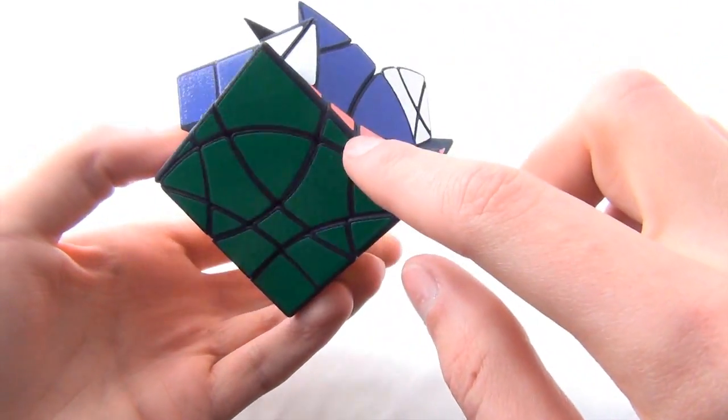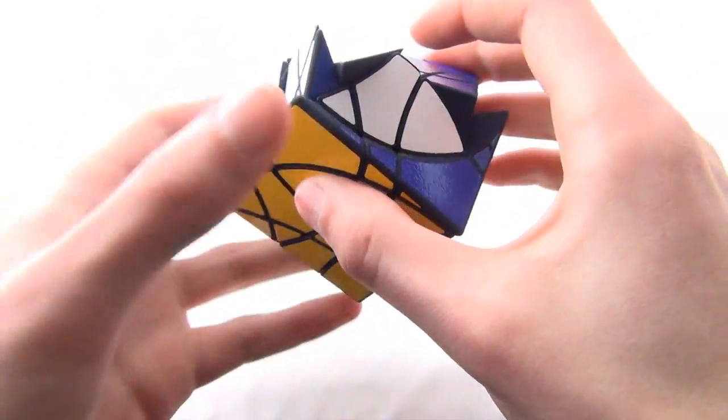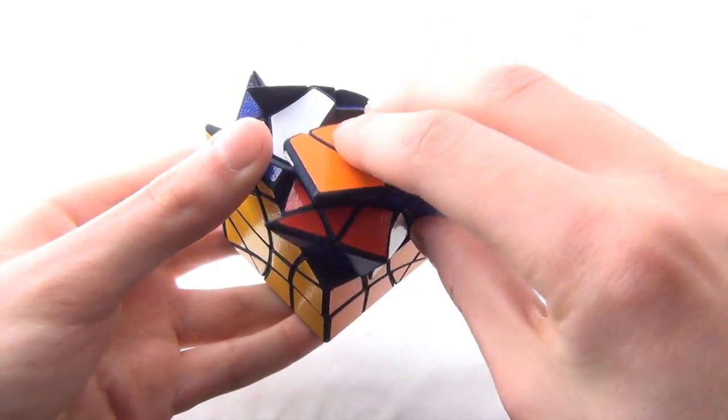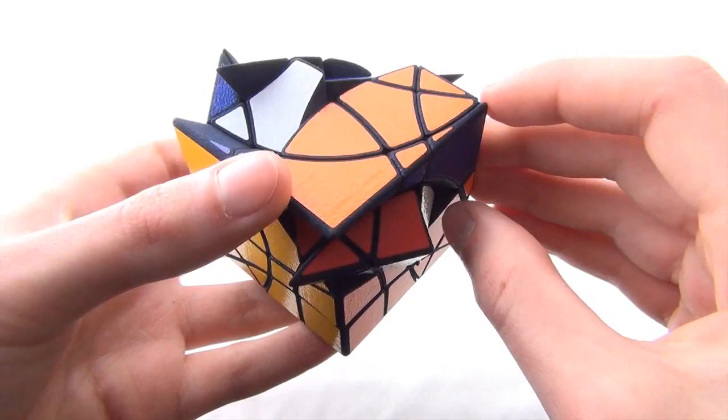This sort of middle belt of pieces around here will never change shape, because those pieces only move with the edge-centered layers.